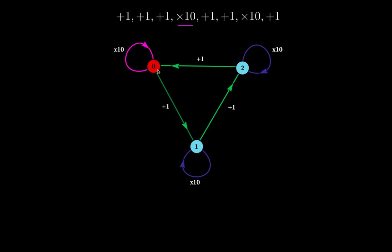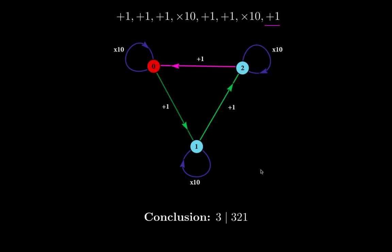Still at 0, plus 1 takes us down to 1. At 1, another plus 1 takes us to 2. The next element is times 10, so we do the cycle at 2 — still at 2. Then plus 1 brings us to 0. Since the sequence ends at node 0, the conclusion is that 321 is divisible by 3, or 3 divides 321.